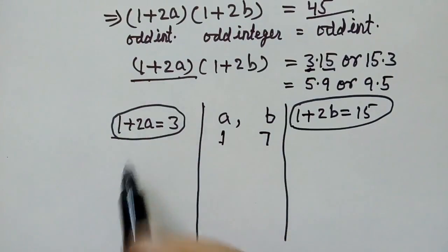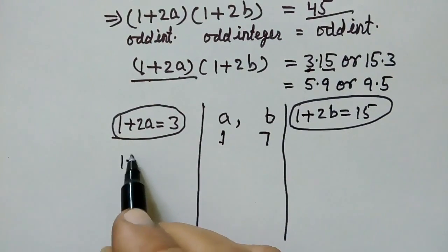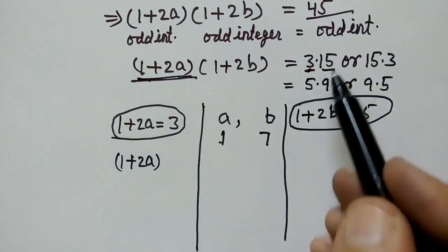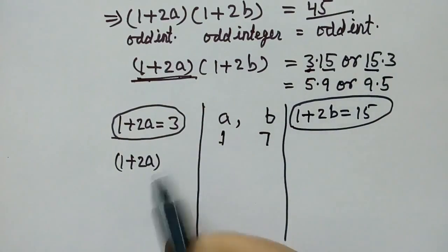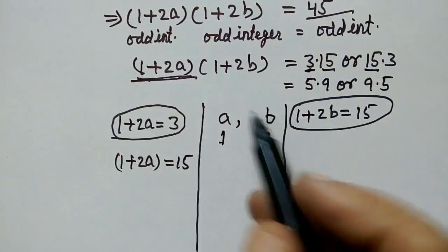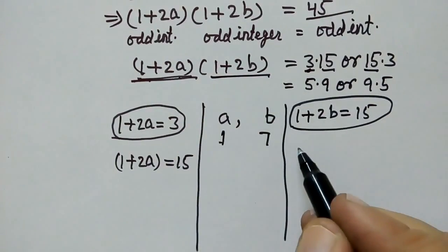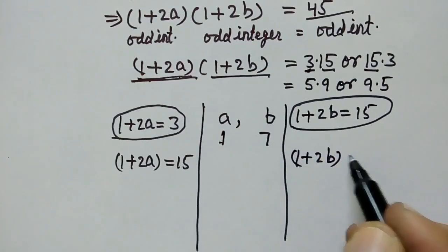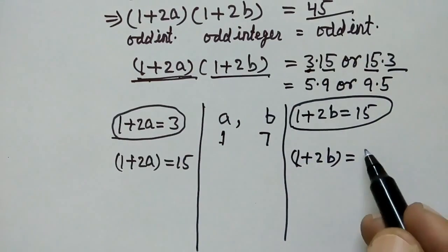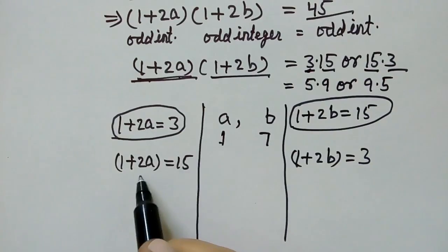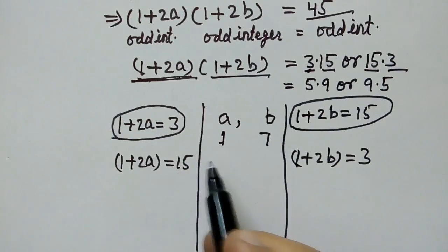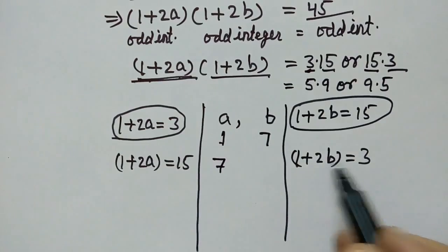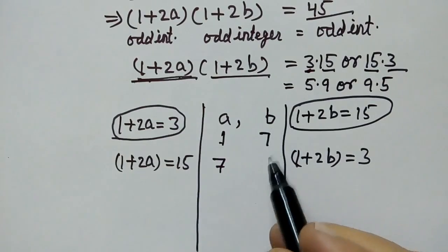Next, we can say: 1 plus 2a equals 15 and 1 plus 2b equals 3. From this equation, the value of a will be 7, and from this, the value of b will be 1.